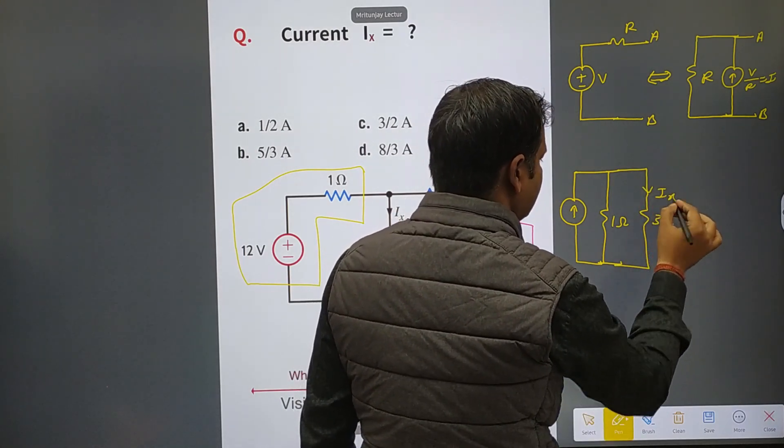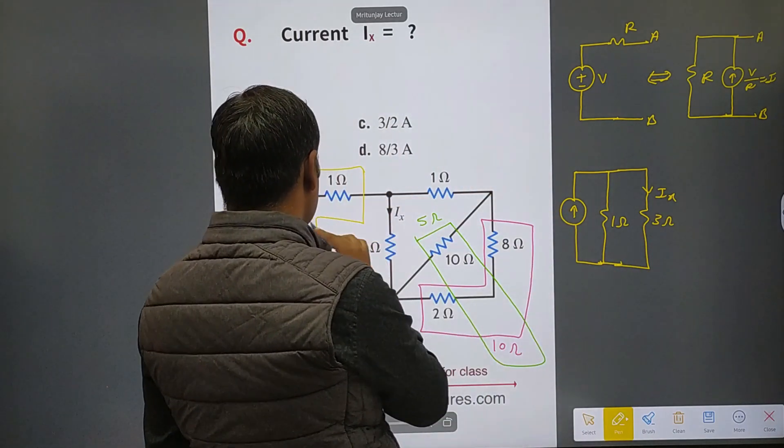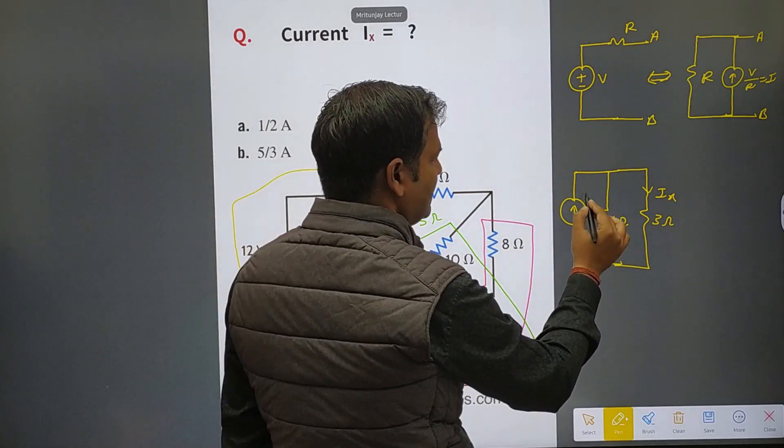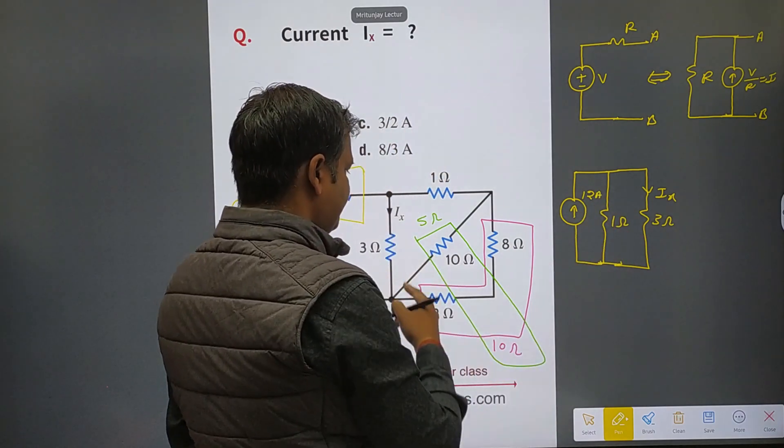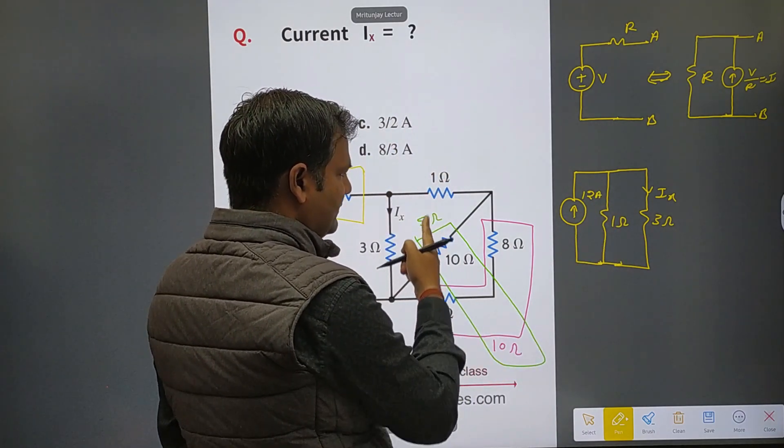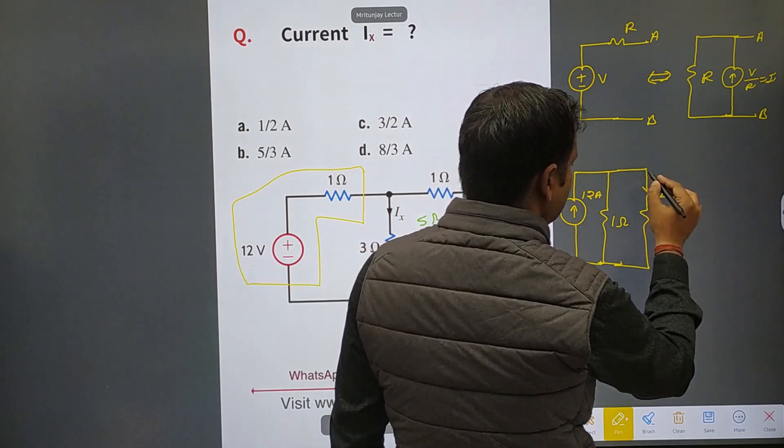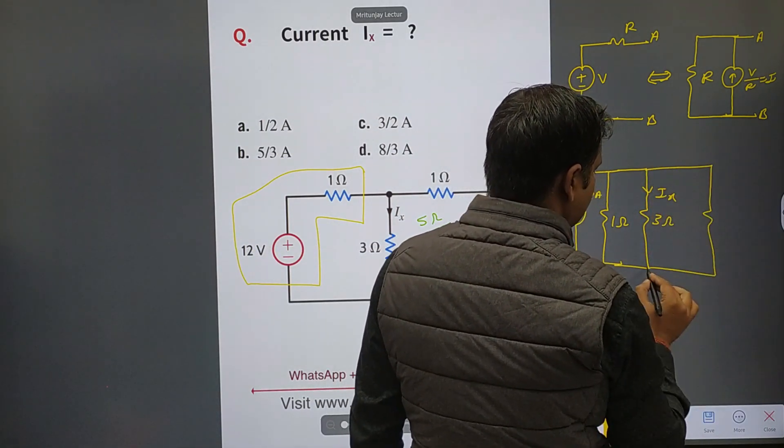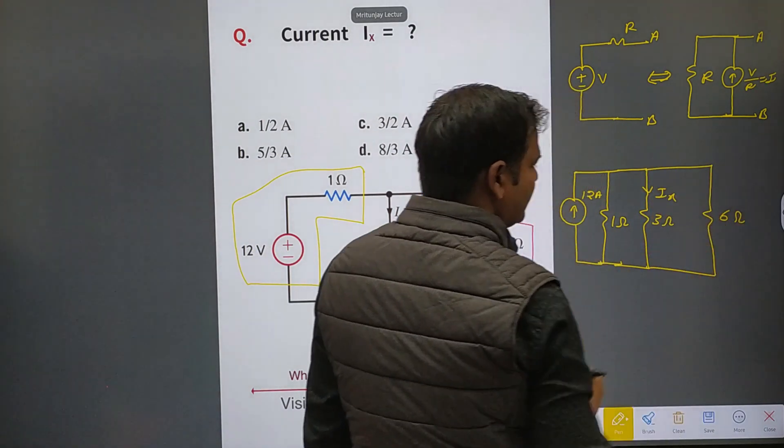And how much current? ix. And what about current? That is 12 ampere. 1 and 5, that is 6 ohm, so this one is made. Clear or not? After that...